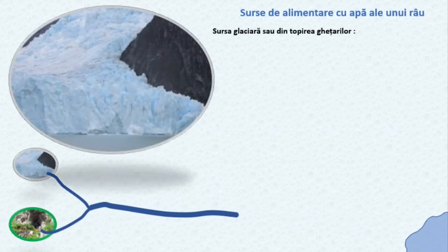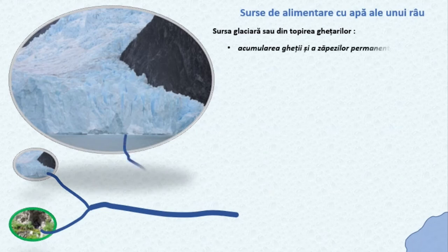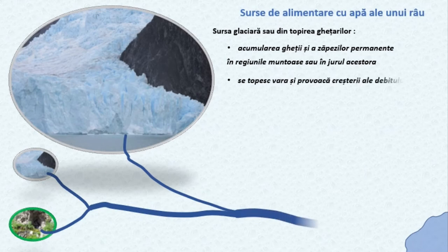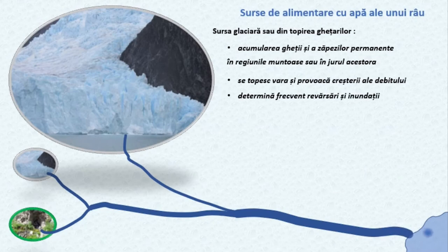Alimentarea râurilor cu apă provenită din topirea ghețarilor și a zăpezilor permanente este întâlnită în regiunile muntoase înalte și în împrejurimile lor. Datorită faptului că topirea zăpezilor și a ghețarilor se produce vara, debitul maxim al acestor râuri va fi semnalat în acest anotimp.